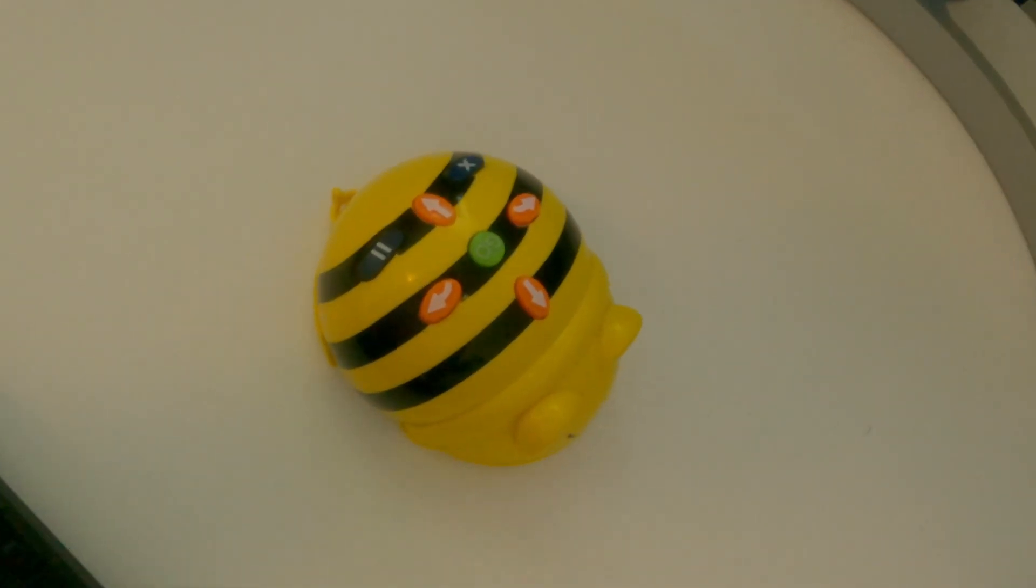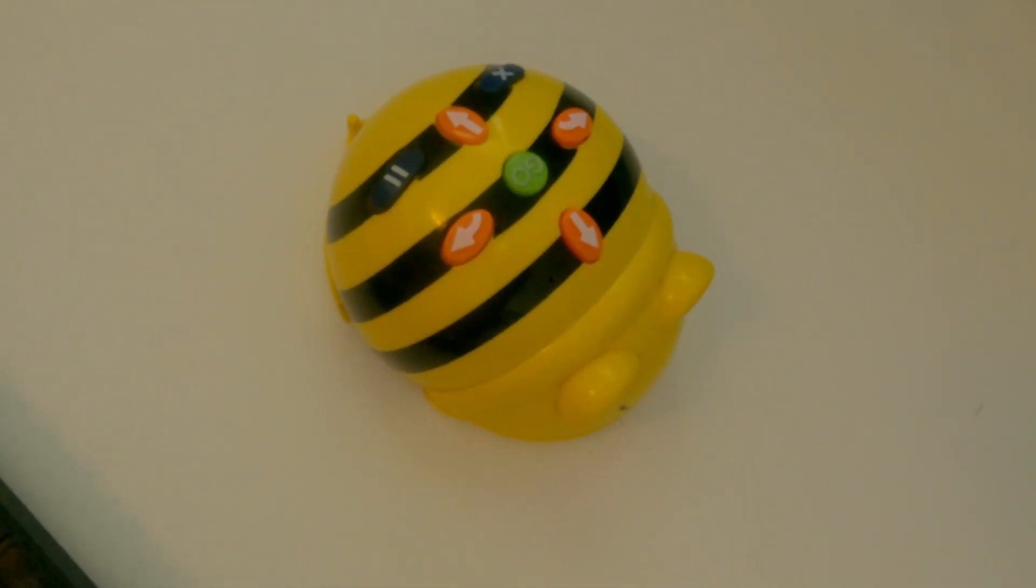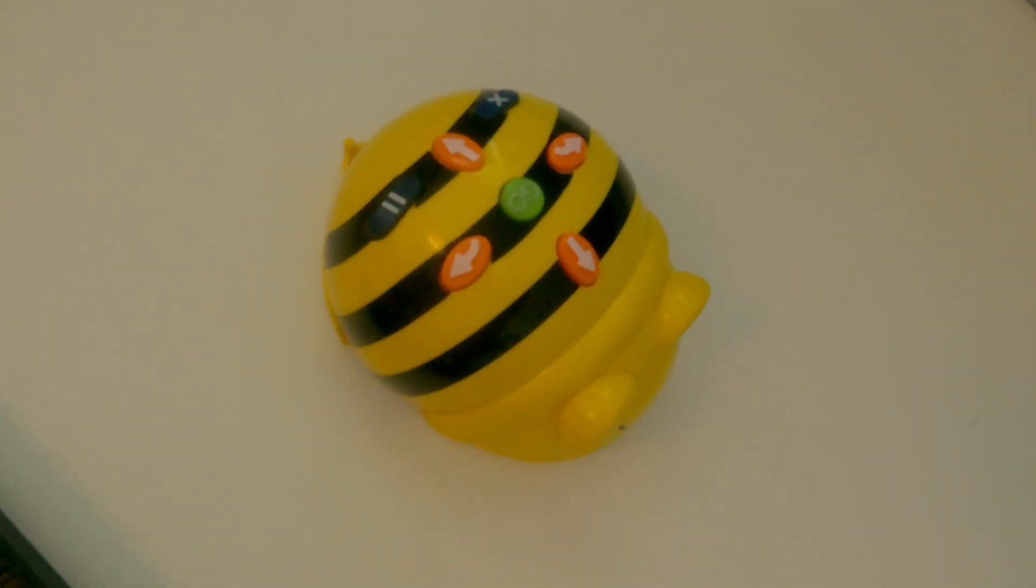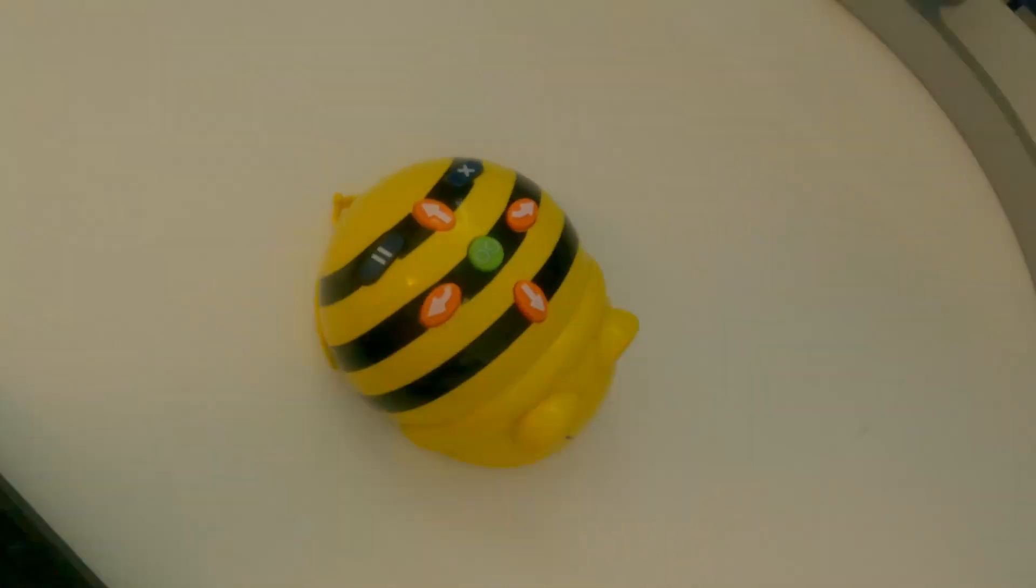Our school bought a few of these B-Bot robots that help kids learn how to code. This will mainly be used in kindergarten and first grade classes and gives the basics of telling the robot some preset directions and then pushing go. Then the robot will carry out that preset program that the kids programmed.